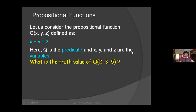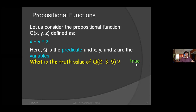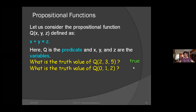So what is the truth value of Q(2, 3, 5)? And what is the truth value of Q(0, 1, 2)? We have a problem with X, Y, Z, and we now have to evaluate these.